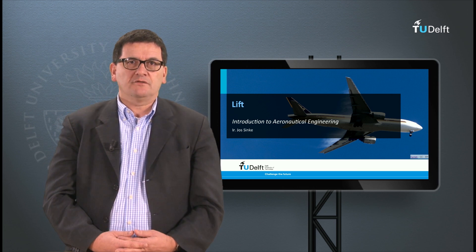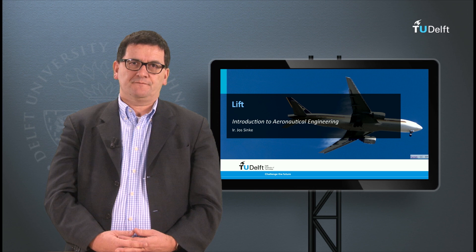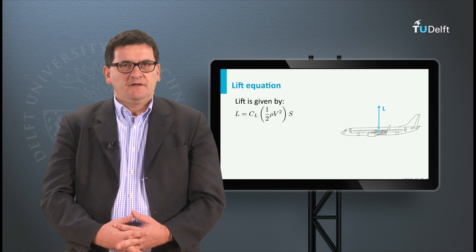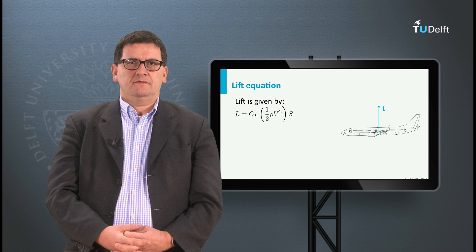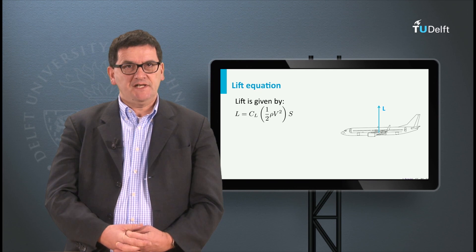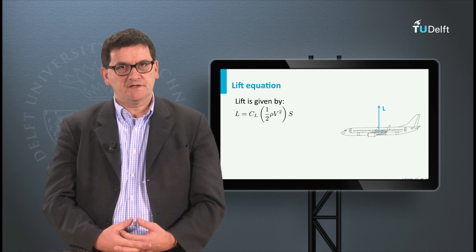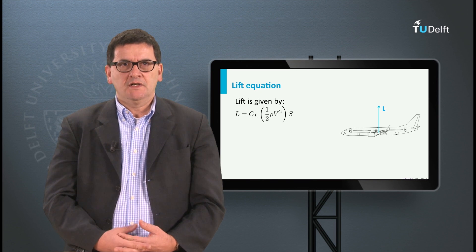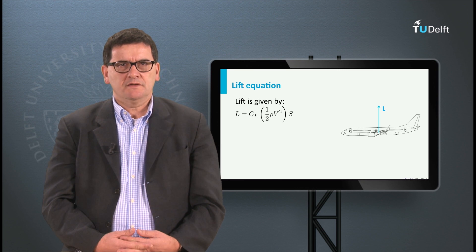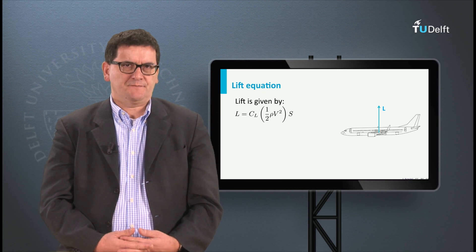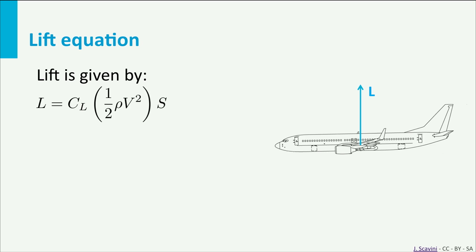In this lecture we will focus on the lift force. The lift force is given by a rather simple equation. The lift is equal to a constant Cl times the product half rho v squared times S. The meaning of these parameters are as follows.